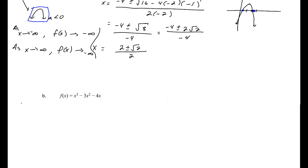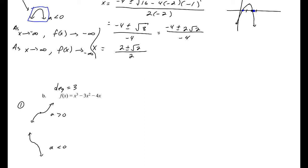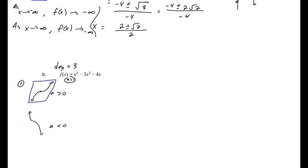For part B, this is a third-degree polynomial. For a cubic, the graph looks either like a rising S-curve (a > 0) or a falling S-curve (a < 0). Our a value is 1, so it's a > 0 and our function increases to the right.